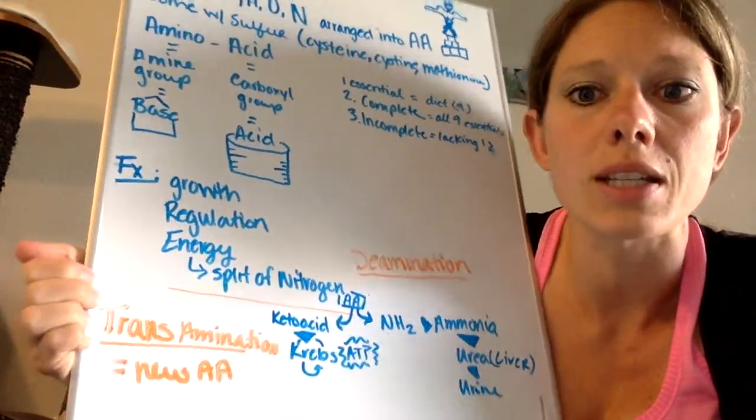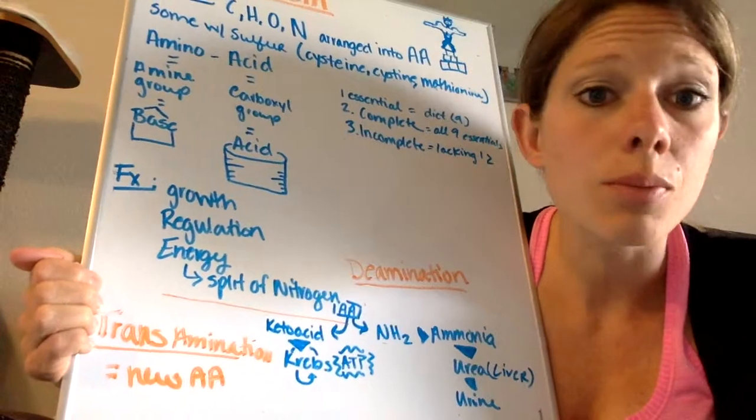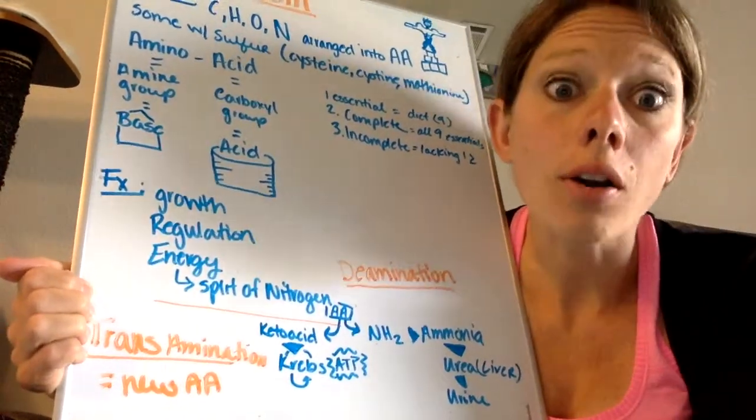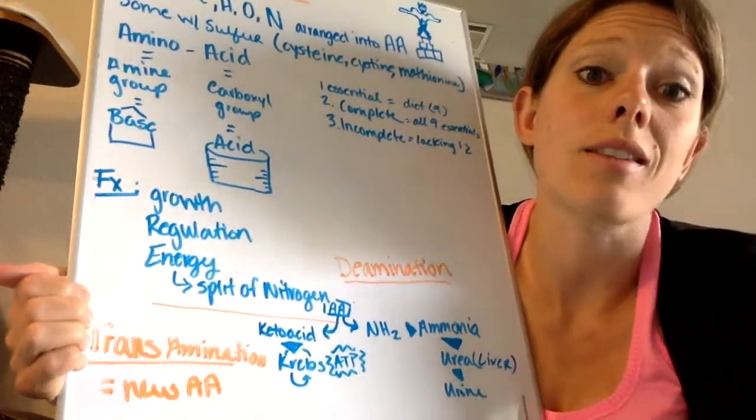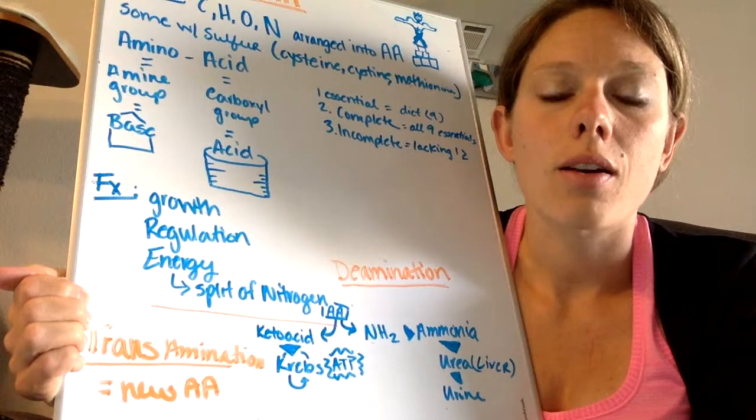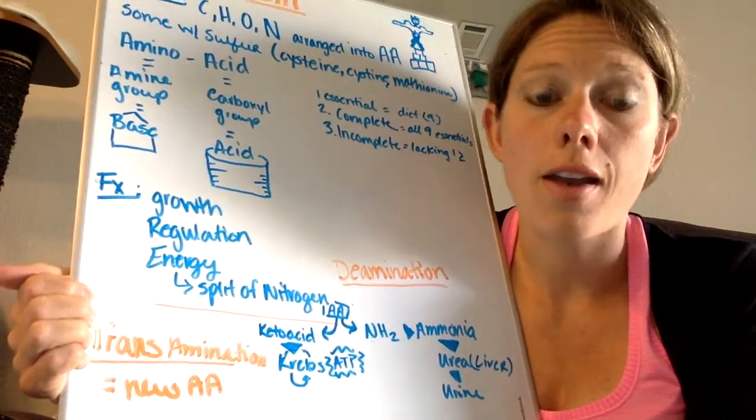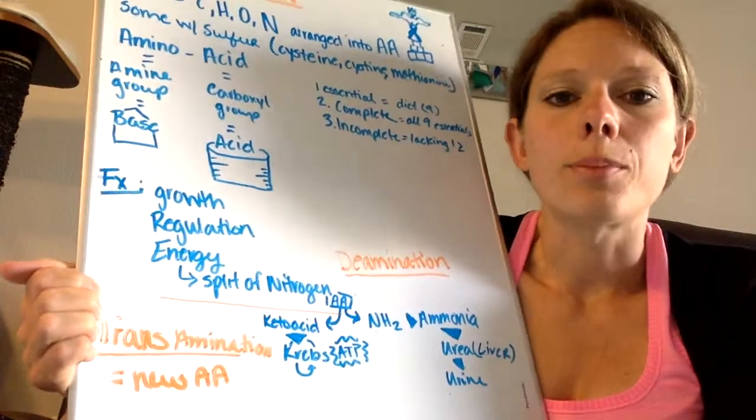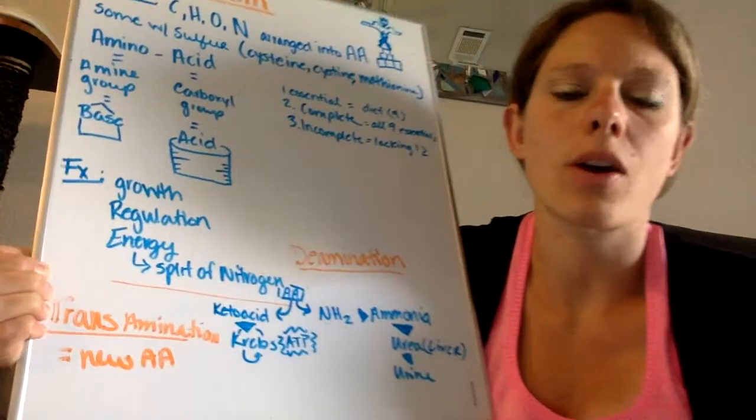Now there is something called protein sparing which our body will do a lot of different things to try and spare using protein for energy. Our muscles, even our heart, some of our organs and all of that are made out of proteins as is a lot of different things in our body. So we don't want to get to a point where we are running out of food or starving or all of our fat stores are gone and now our body is going to start breaking down protein for energy. That's not ideal but it can be a source of energy in certain situations.